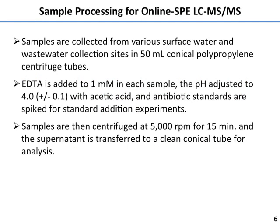Our process now is very simple. We go out with polypropylene conical centrifuge tubes to collect our water samples. We add EDTA, adjust to pH 4 with acetic acid, and then whatever spiking we're going to do for standard addition is done at that point. We then centrifuge them in the same 50 mL conical tubes for about 15 minutes, transfer the supernatant to a clean tube, and that container is sampled directly by the instrument. It's very straightforward in terms of sample prep.